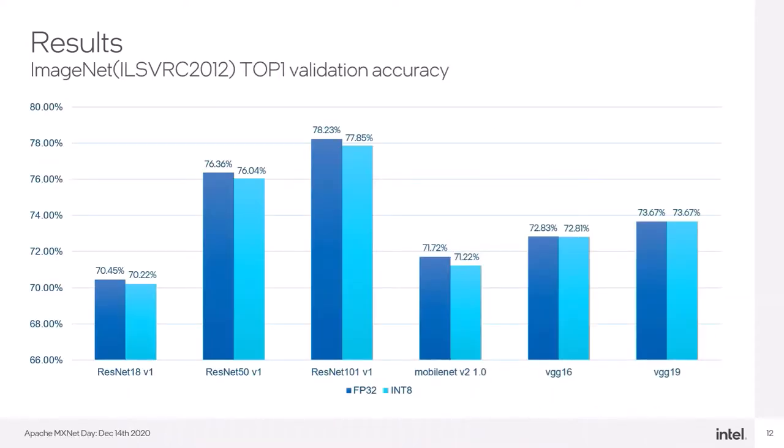On this slide, we have the results of top-1 ImageNet accuracy for computer vision models. And as you can see, by calling single function, you can gain a significant performance boost almost without losing accuracy. In the chart, the biggest accuracy drop is actually for MobileNet V2, but it's still only half a percentage point less than FP32 model.